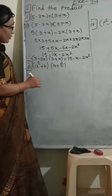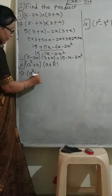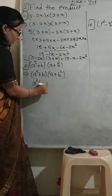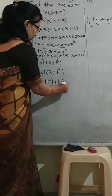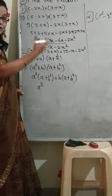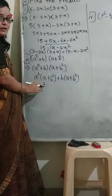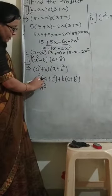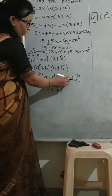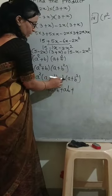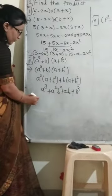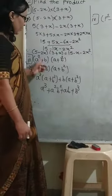Third example: (a² + b)(a + b²). Expanding: a² into (a + b²) plus b into (a + b²). So a² into a gives a cubed, a² into b² gives a²b². Plus b into a gives ab, plus b into b² gives b cubed. We check for like terms — there are none. Therefore the answer is: (a² + b)(a + b²) = a³ + a²b² + ab + b³.